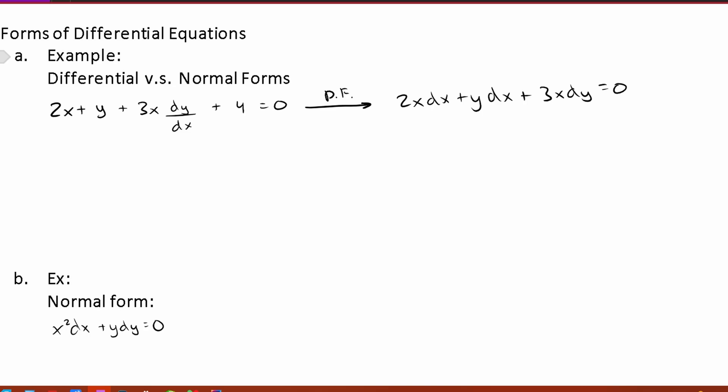Now to really put it in this differential form we can group things together. So we'll have 2x plus y and then we'll have our dx outside plus 3x dy is equal to zero. This is our differential form.